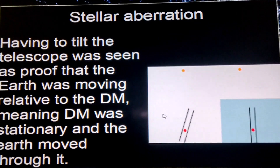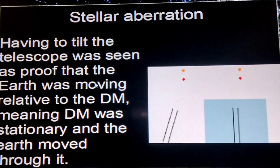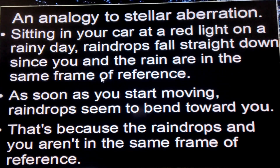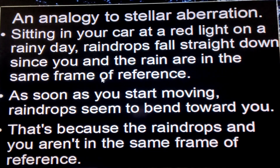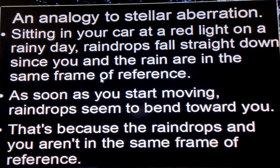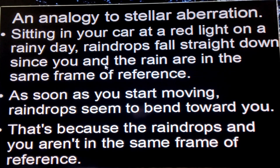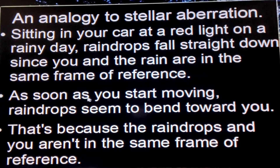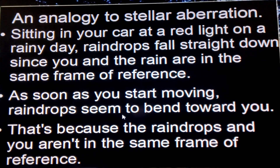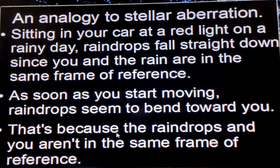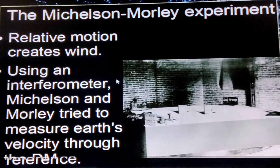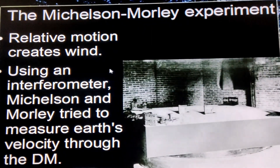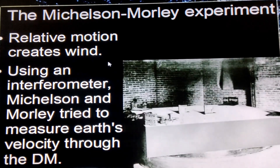Here's an analogy: if you're sitting in a car at a red light on a rainy day with no wind, you can see raindrops falling straight down because you and the rain are in the same frame of reference — both not moving. But as the light changes and you start moving, the raindrops seem to bend toward you because you and the raindrops are no longer in the same frame of reference.